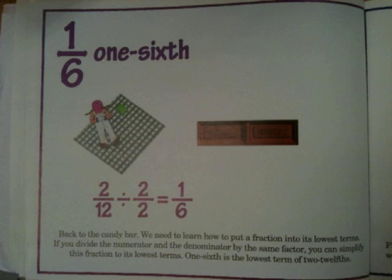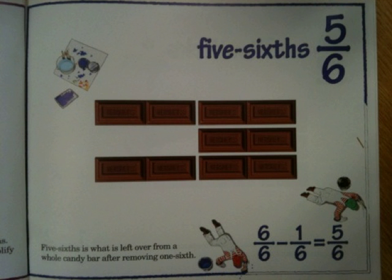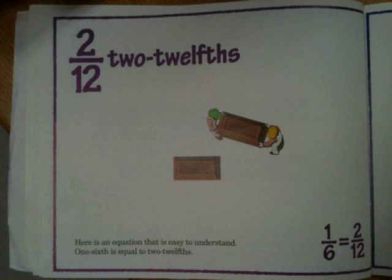One sixth. Back to the candy bar. We need to learn how to put a fraction into its lowest terms. If you divide the numerator and the denominator by the same factor, you can simplify this fraction to its lowest terms. One sixth is the lowest term of two twelfths. One sixth is equal to two twelfths.